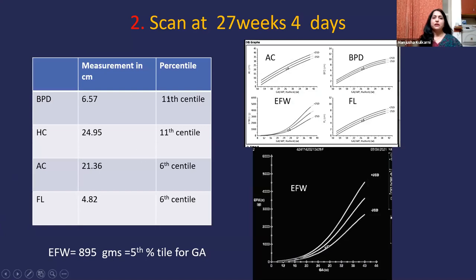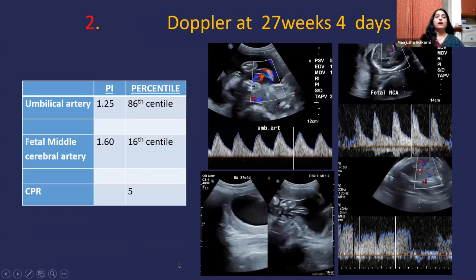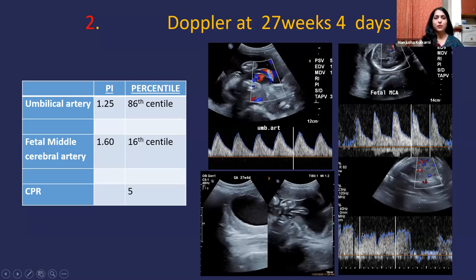This was the follow-up scan at 27 weeks, wherein the head parameters were at the 11th centile, and AC and femur length at the 6th centile. The estimated fetal weight had now come to the 5th centile for gestational age. On Doppler, the umbilical artery had gone up to the 86th centile, the fetal middle cerebral artery percentile had dropped to the 16th centile, and the CPR had come down to the 5th centile. The ductus venosus flow pattern was well within normal limits.